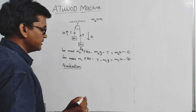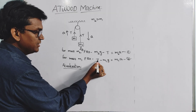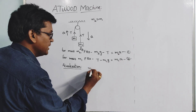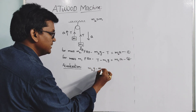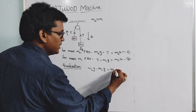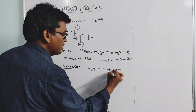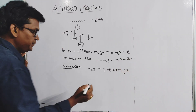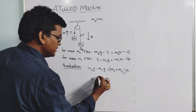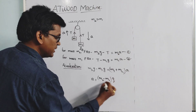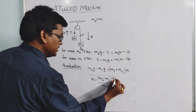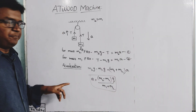Adding equation 1 and equation 2, the tension T cancels out, giving: m2g minus m1g equals (m1 plus m2) times a. Therefore, acceleration a equals (m2 minus m1) times g, divided by (m1 plus m2). This is the acceleration of the blocks.